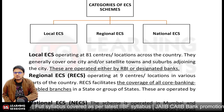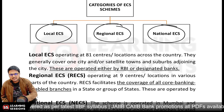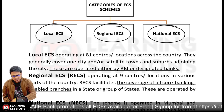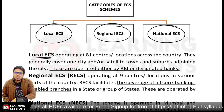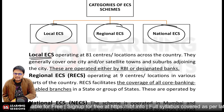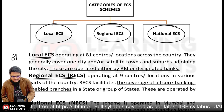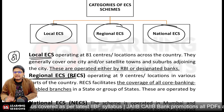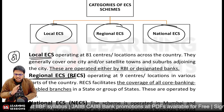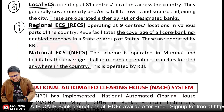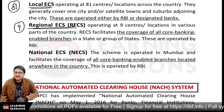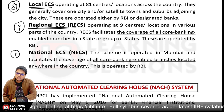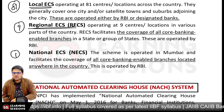There are categories of ECS schemes: Local ECS, Regional ECS, and National ECS. Local ECS covers 81 centers across the country, generally covering one city or satellite towns. Regional ECS (RECS) operates at 9 centers and covers all core banking enabled branches. National ECS operates at one center in Mumbai and covers all core banking enabled branches located anywhere in the country.